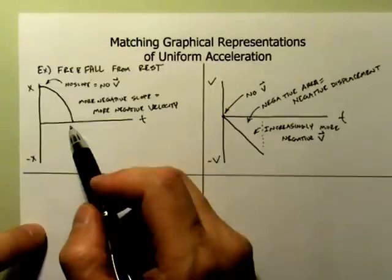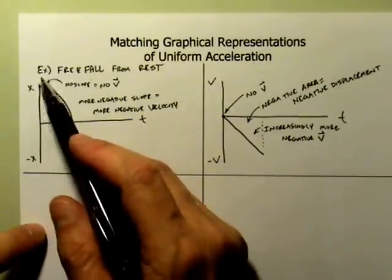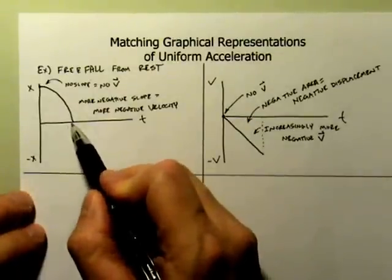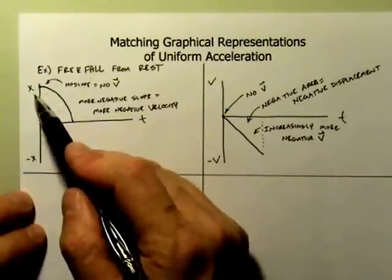Now the change in displacement or the change in position is going to be the final position or final displacement minus the initial position or displacement. So in this case I have 0 minus positive 25 and 0 minus 25 would give me negative 25.